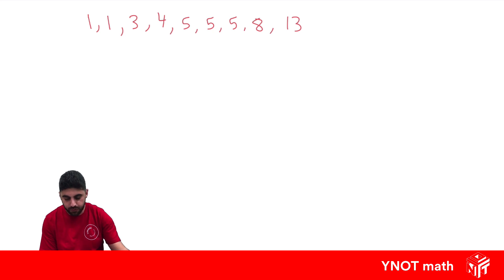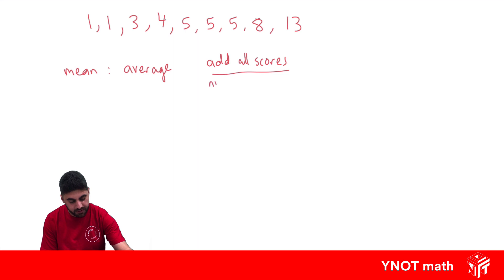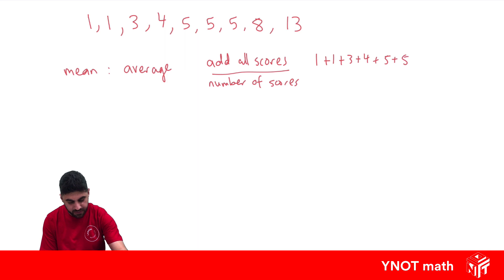First, let's look at the mean. The mean is just the average of all scores. To find the average, you're going to have to add up every score, then divide by the number of scores. So in this case we need to do 1 + 1 + 3 + 4 + 5 + 5 + 5 + 8 + 13, divided by how many scores there are.